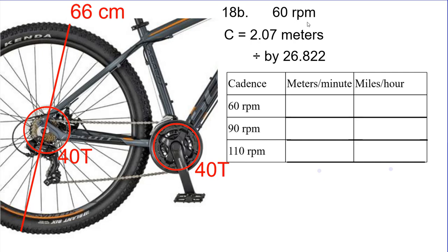At 60 RPM, the circumference we said was 2.07 meters. To find how many meters we traveled in a minute, we simply multiply 60 times 2.07, which gives us about 124 meters per minute. Now if we wanted to change that to miles per hour, we divide by the scale factor of 26.822. So at a one-to-one gear ratio, at a resting cadence of 60 RPM — about one rotation per second — we'd be traveling about 4.6 miles per hour. You can speed walk that fast, by the way.